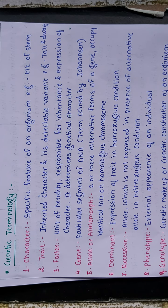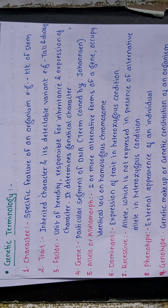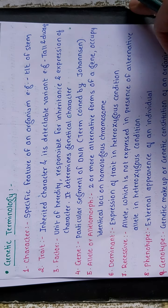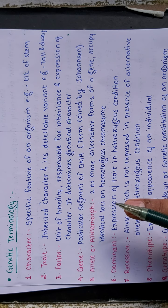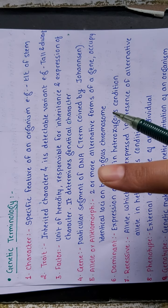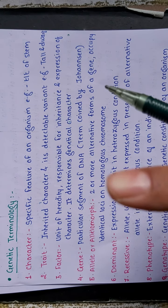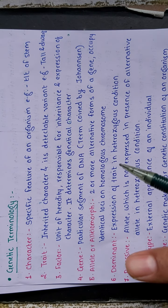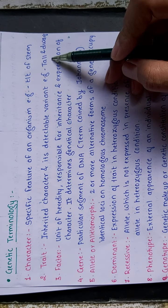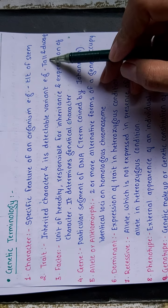Character is a specific feature of an organism — for example, height of the stem. The second term is 'trait': the inherited character and its detectable variant. So whatever character is inherited from parent to offspring and is detectable is a trait. Example: tall and dwarf.